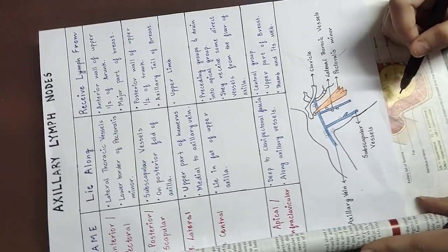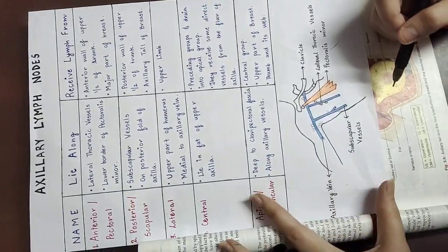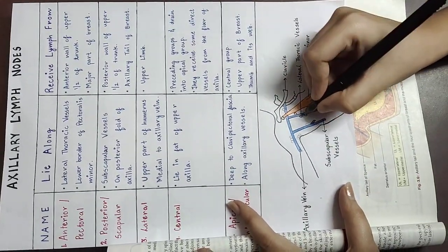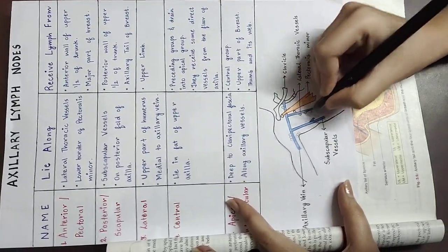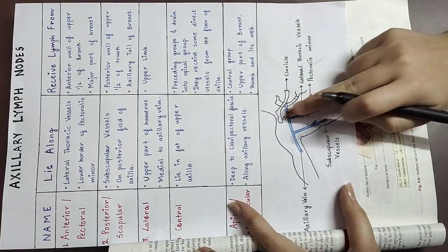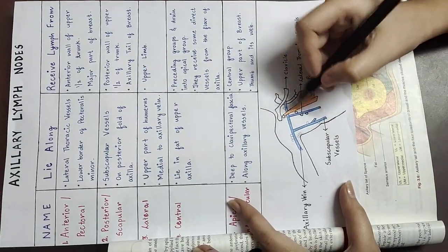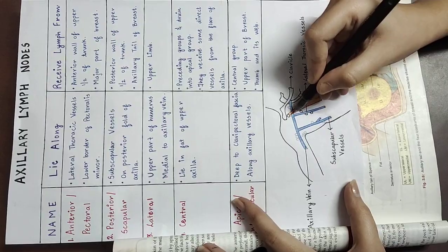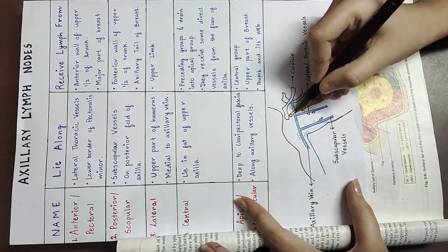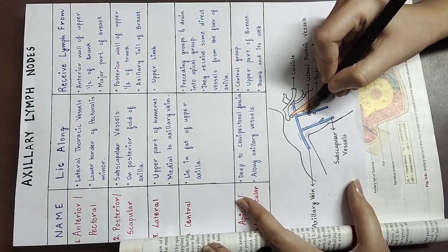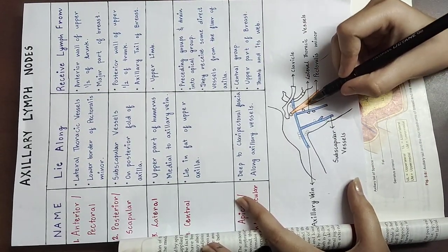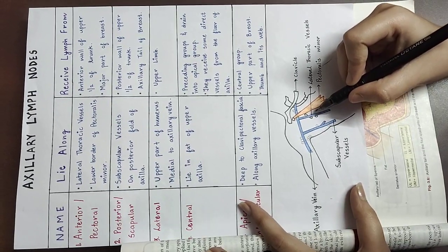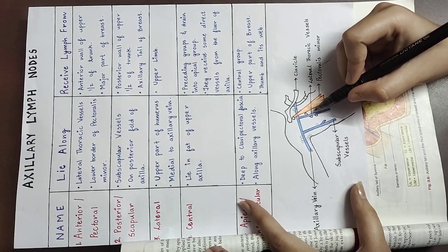First, if we locate the anterior or pectoral group, they lie along the lateral thoracic vessels and the lower border of the pectoralis minor muscle. They are present on the lower border of the pectoralis minor, so we call them pectoral lymph nodes.